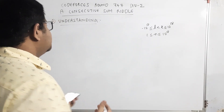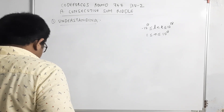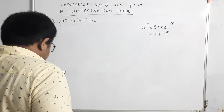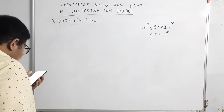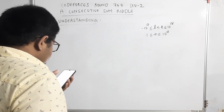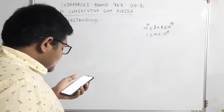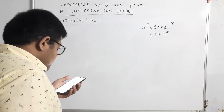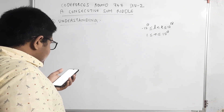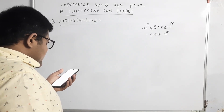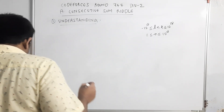Okay, so as always let us start by understanding the question — Consecutive Sum Riddle. You are given an integer n, and you need to find two integers l and r such that the given constraints are satisfied and l + (l+1) + ... + r equals n.